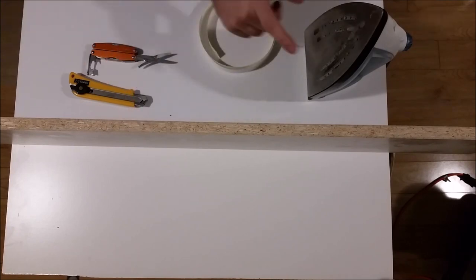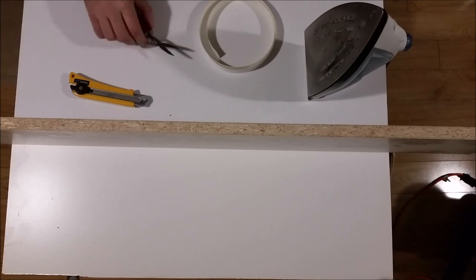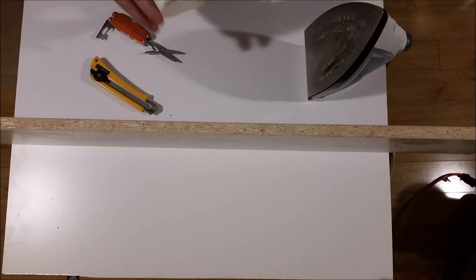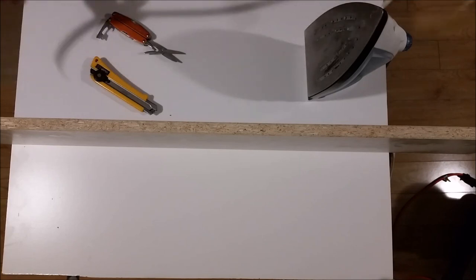Your board, a hot iron, pair of scissors, a utility knife, as well as a roll of the edge product you can buy. I'm gonna put a link below to show what kind of options there are.